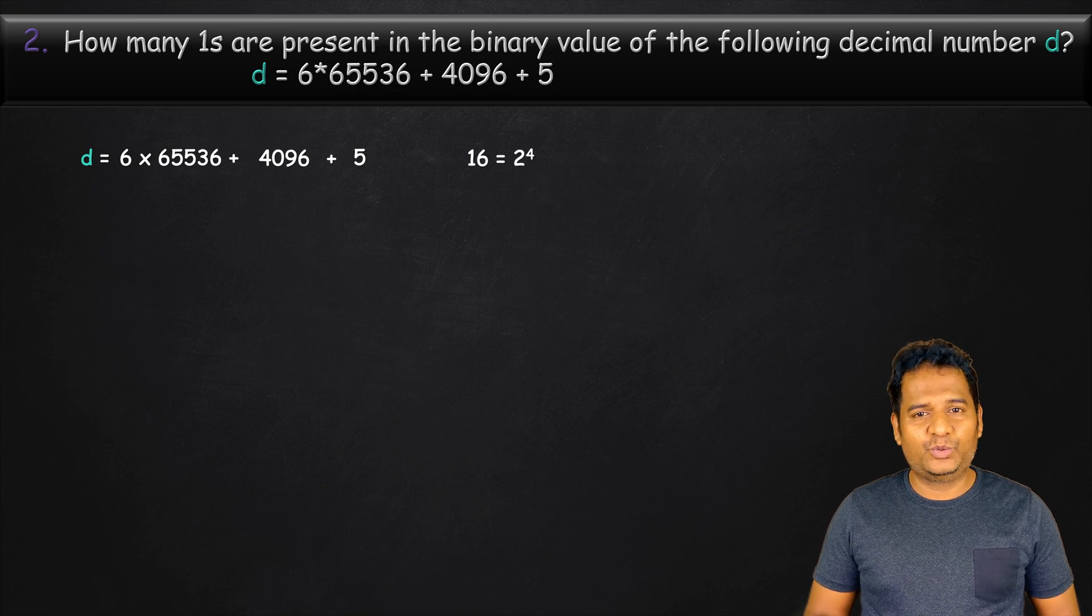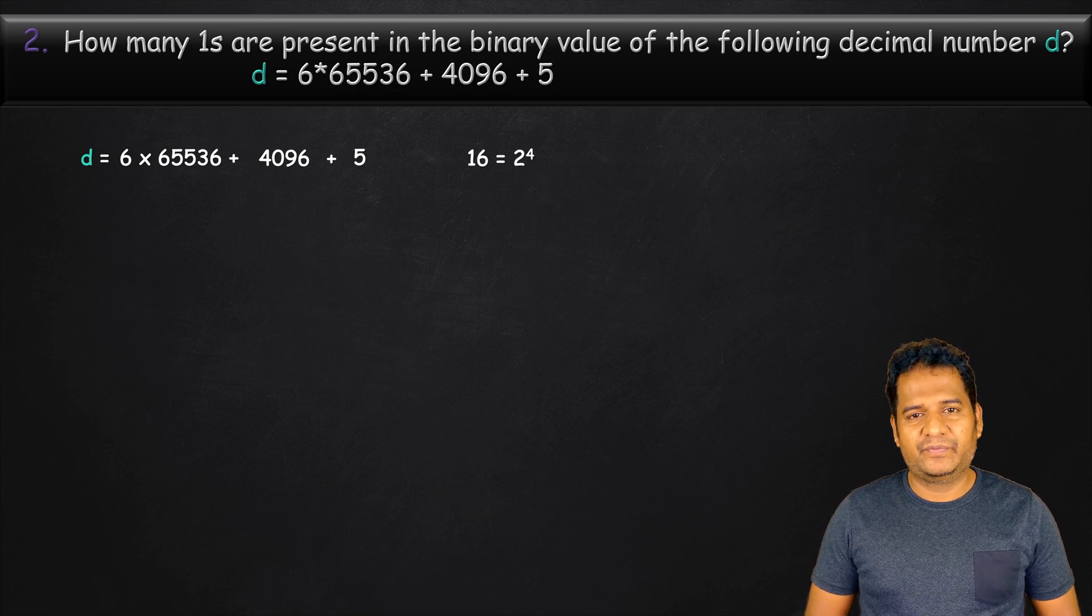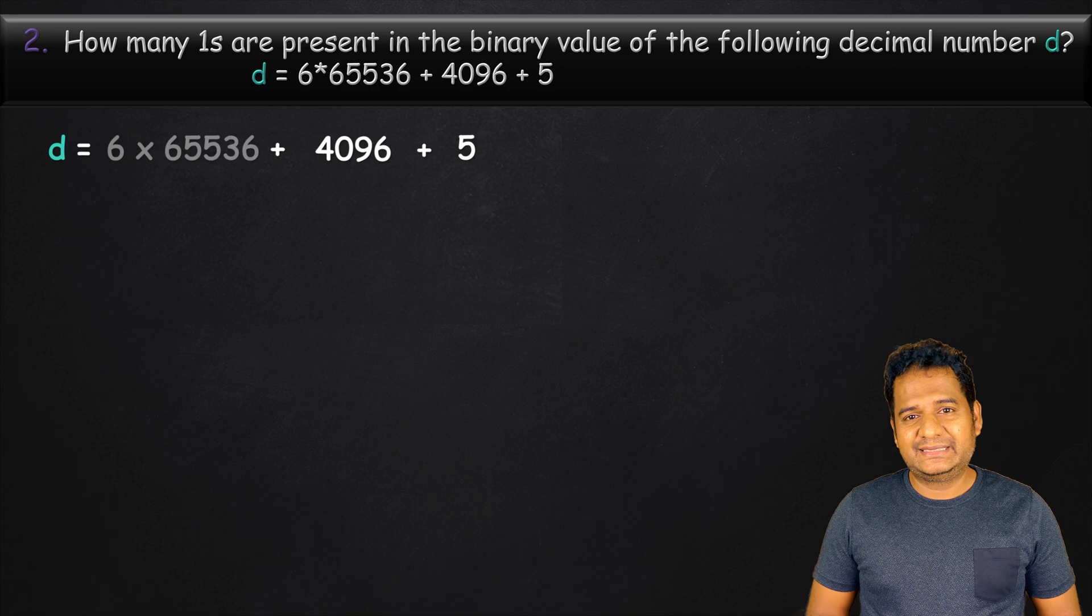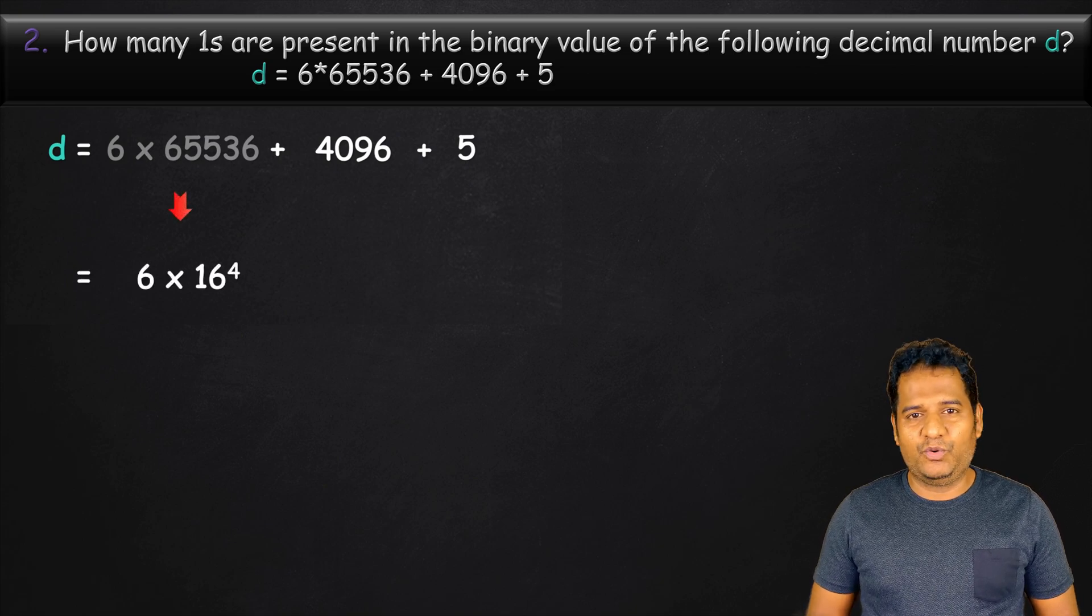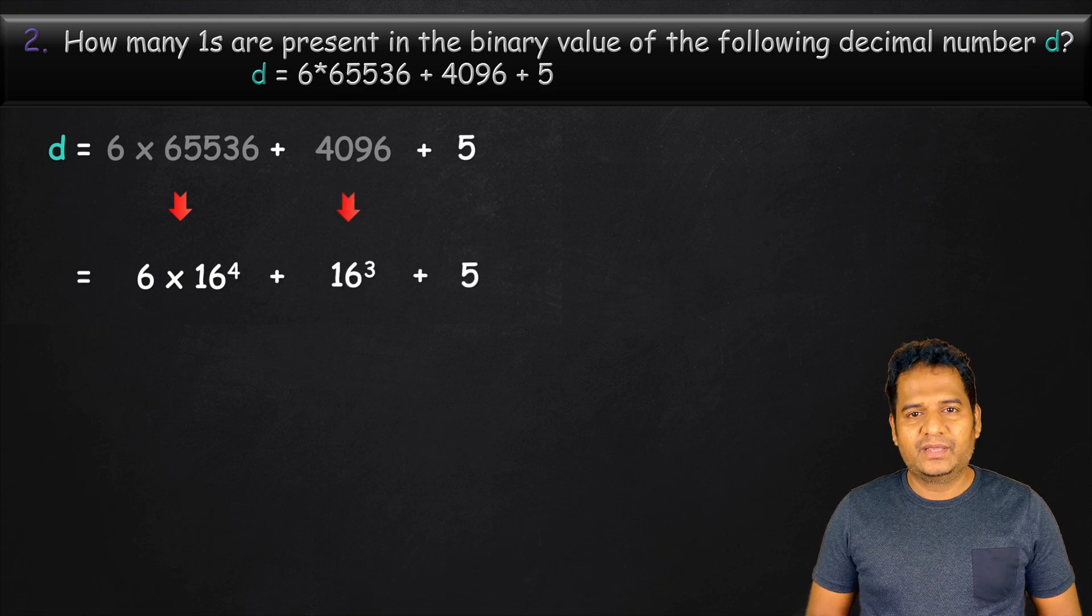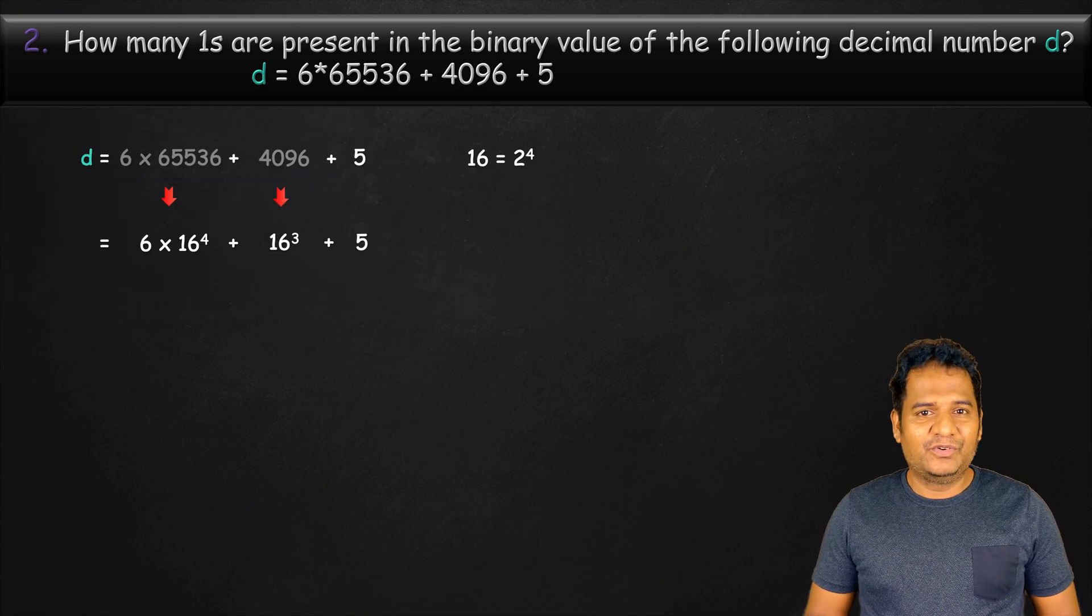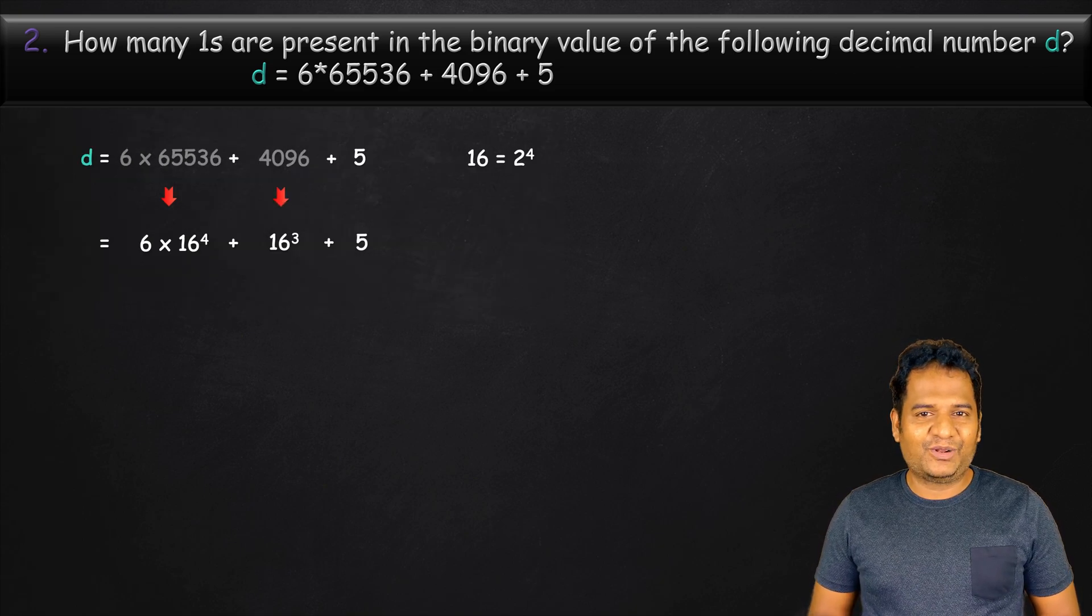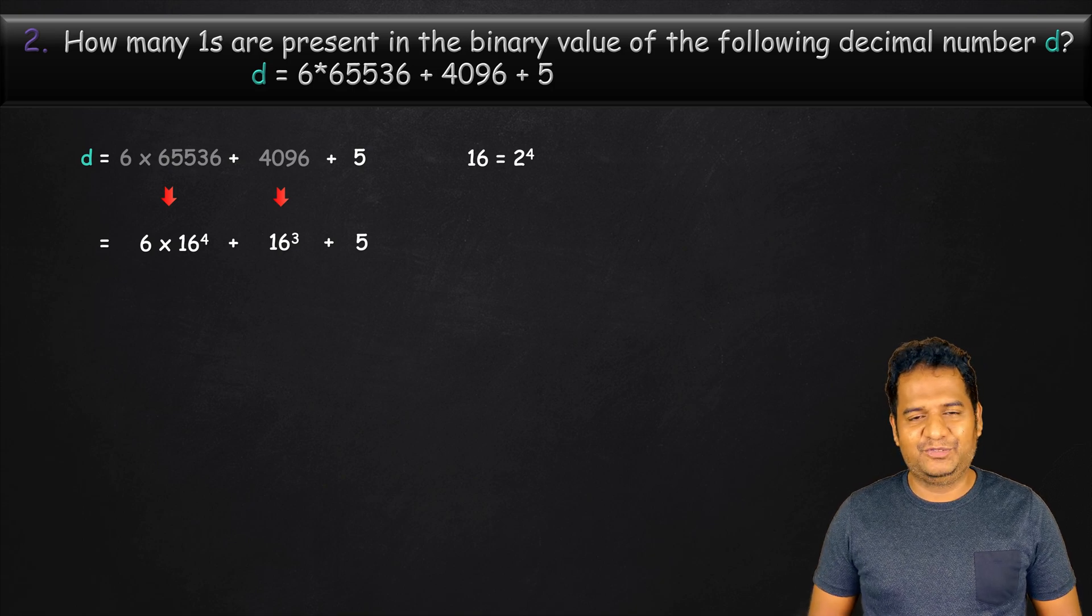Let's convert this expression to have powers of 16. 65536 is nothing but 16 power 4. And 4096 is nothing but 16 cube. If we know how to convert hexadecimal to binary, we can solve this problem at this step itself.